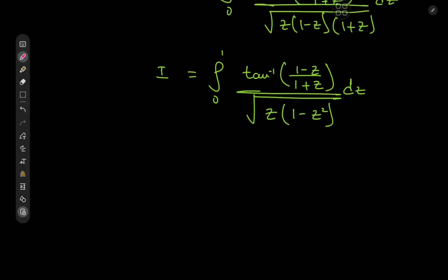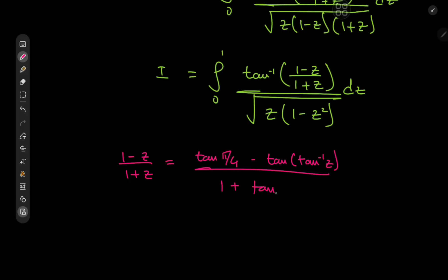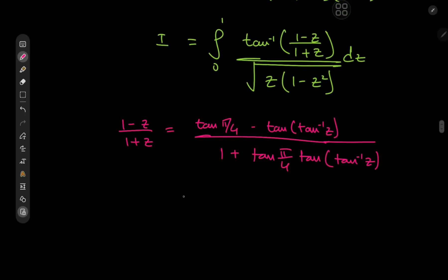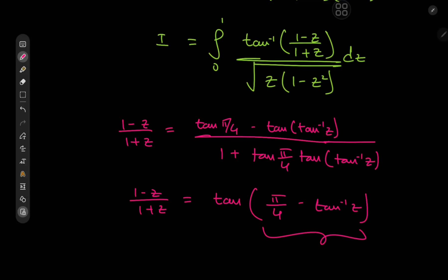One trick I learned was to use the tangent of a plus b formula. Here's an example: we're given 1 minus z divided by 1 plus z, which can be written as the tangent of pi by 4 minus the inverse tangent of z, in the numerator, with 1 plus tangent of pi by 4 times tangent of inverse tangent of z in the denominator. So that means we have the tangent of pi by 4 minus the inverse tangent of z equal to 1 minus z divided by 1 plus z. Therefore the inverse tangent of 1 minus z divided by 1 plus z equals pi by 4 minus the inverse tangent of z, which is quite nice.